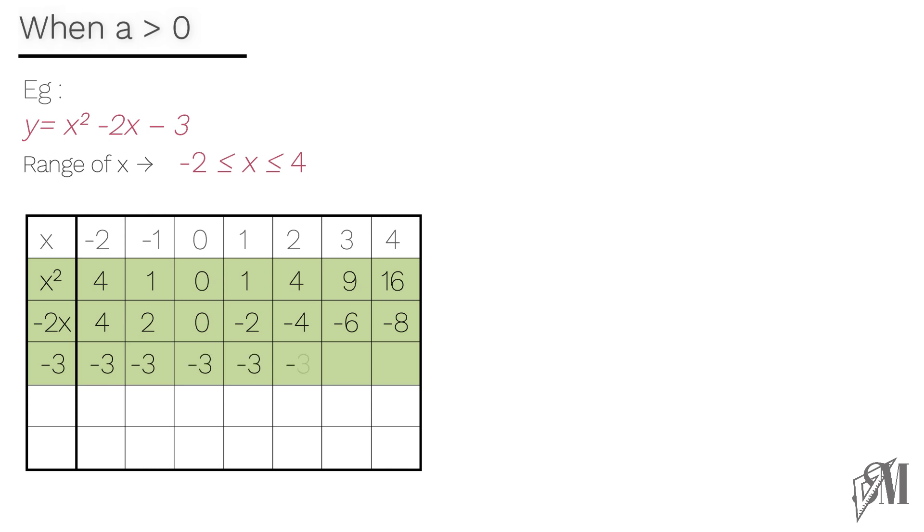The minus 3 row is filled as minus 3 itself, which says we subtract 3 from the numbers above. Now let's take the y coordinate. All you need to do is sum up the three digits in the shaded part down each column. That is 4 plus 4 is 8, 8 minus 3 is 5. So when x is equal to minus 2, y becomes 5. Likewise we fill the rest of the blanks. Now we have taken the coordinates.